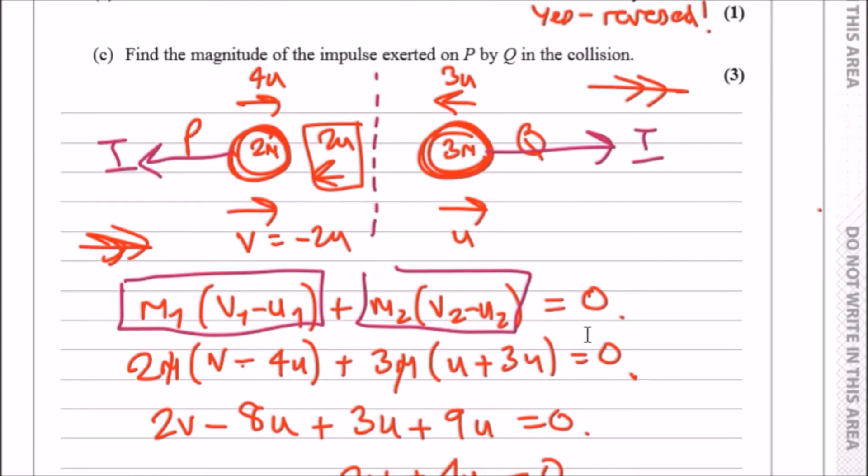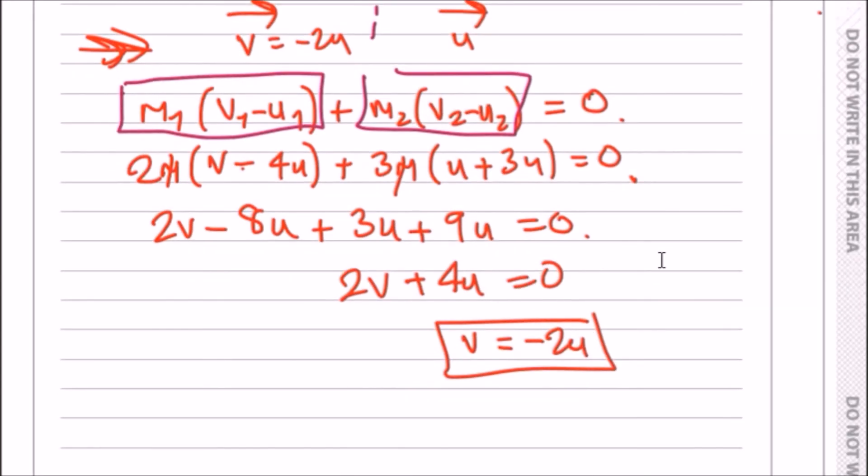Whatever result you get, you've practically found your impulse. In this case it says exerted on P by Q. They should both give you the same result because I plus minus I should give you zero. Let's just take the first one.